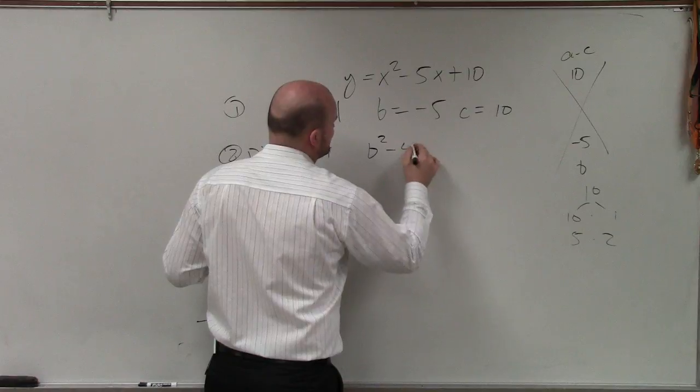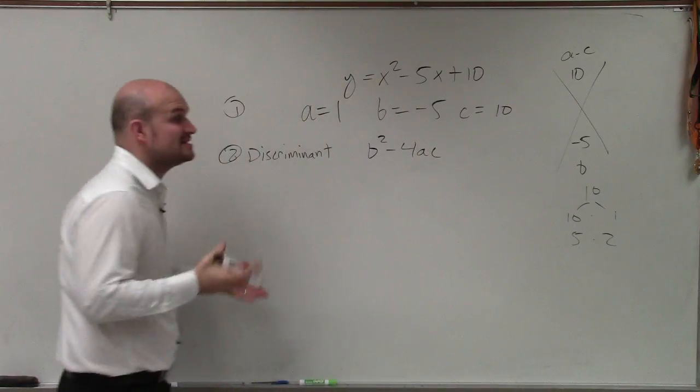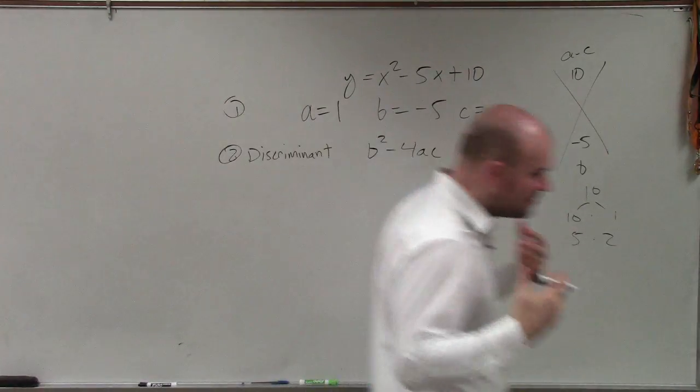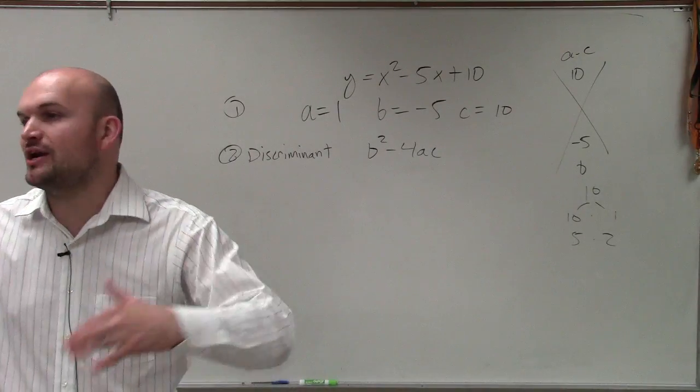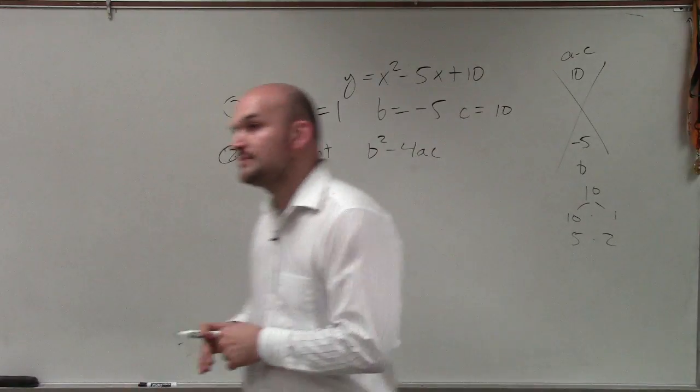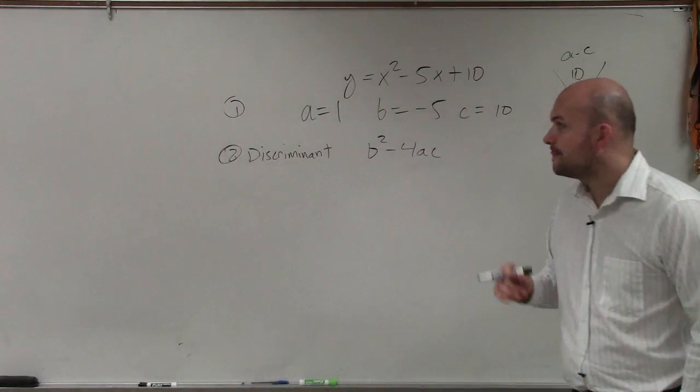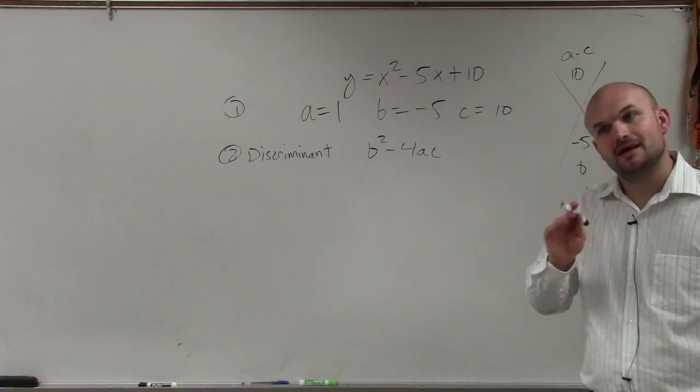Discriminant is going to be b squared minus 4 times a times c. So basically, all I'd like you guys to do is just practice finding, determining what the value is of the discriminant. I'm going to explain what exactly the discriminant is a little bit more. Not in this video, though, but I will explain it. So I'll explain it in a little bit more detail to you next time. But for right now, we haven't gone into it.